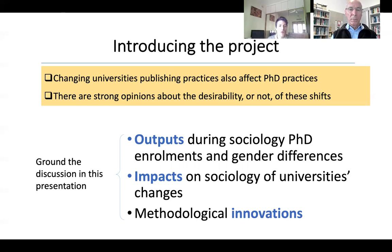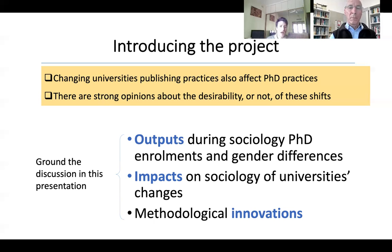For instance, how do you locate and identify sociology PhD theses? How do you identify what counts as refereed research outputs? And how do you identify which outputs students published during candidacy and which were published after?